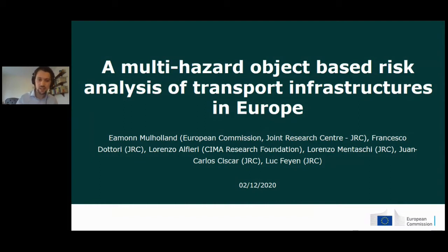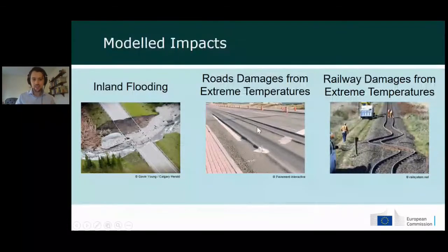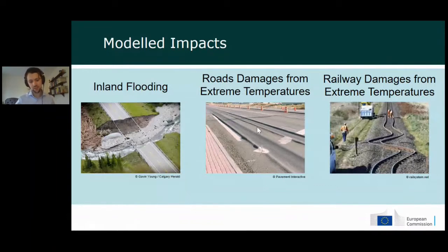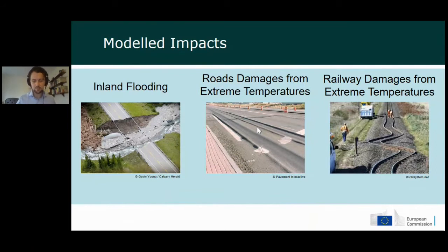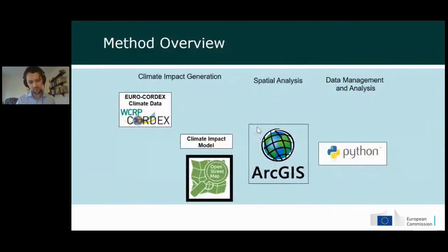The transport sector is affected by many climate impacts, but I'm focusing on the three main ones chosen because of their high level of baseline damages: inland flooding, extreme temperature damages to roads, and extreme temperature damages to railways. The method follows the IPCC framework of hazard, risk, and vulnerability analysis. We use the EURO-CORDEX climate database, taking gridded climate data — temperature and precipitation — at 12.5 km² resolution.